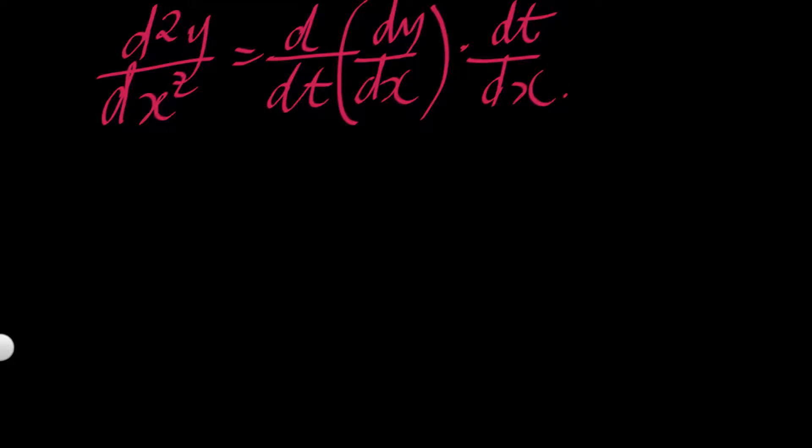We already have dy/dx, we also have dt/dx, so it's just a method of substituting into our formula. This means we are differentiating d/dt of dy/dx is 2 over t.